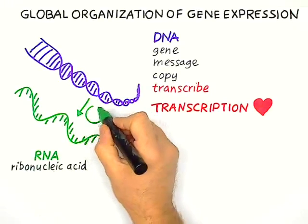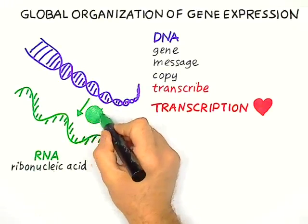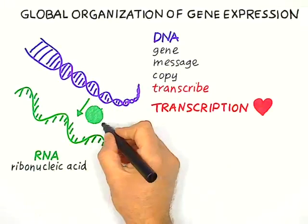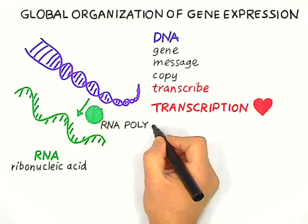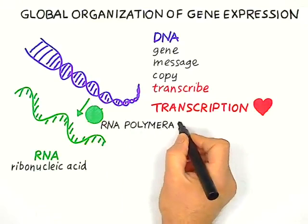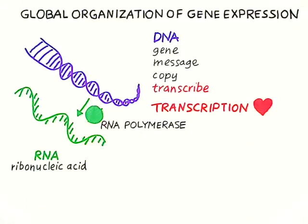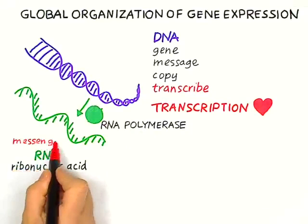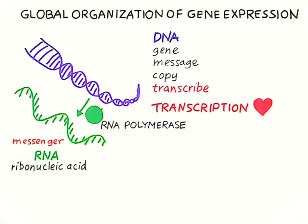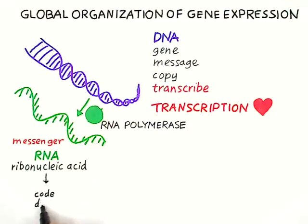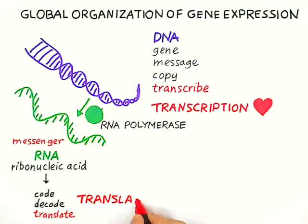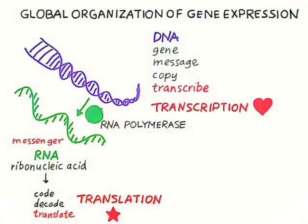Similarly to DNA replication, this copying mechanism employs a molecular machine — an enzyme called RNA polymerase. The RNA that is made is naturally called messenger RNA. Its message is a code, and who says code implies decode — or as biologists say, translate. Translation is the second essential basic mechanism in gene expression.